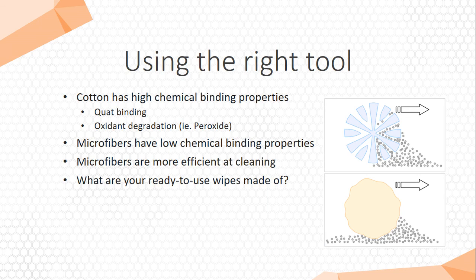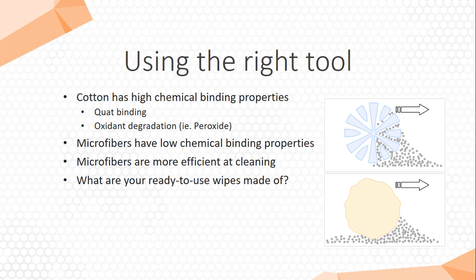Microfibers are very important — it's important to use the right tool. Cotton has high chemical binding properties, meaning it will react with or bind the disinfectant. The quat-binding phenomenon is well known: quaternary ammonium compound disinfectants will stick to the cotton and not go onto the surface to achieve disinfection. Cotton may also create oxidant degradation with hydrogen peroxide — it reacts with natural fiber. Any natural fiber like linen acts the same way.